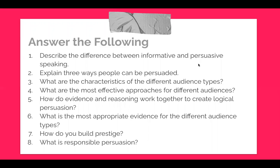Here are eight questions. Can you tell someone the difference between informative and persuasive speaking? Can you explain three ways people can be persuaded? Remember, the three ways people can be persuaded are from that first slide, first day, when we talked about persuasion in general. What are the characteristics of the four different audience types and the effective approaches for each, including mixed audiences? How do evidence and reasoning work together to create logical persuasive rhetoric? What is the most appropriate evidence for each audience type? How do you build and establish prestige? And lastly, what is responsible persuasion?